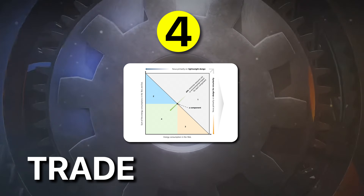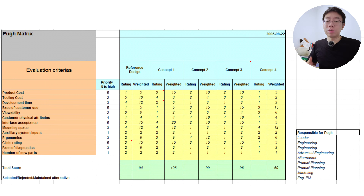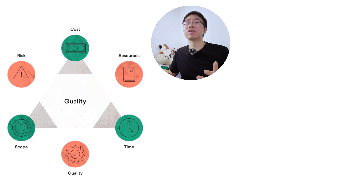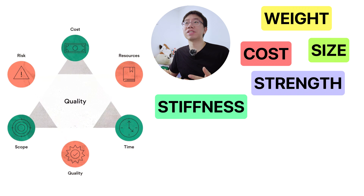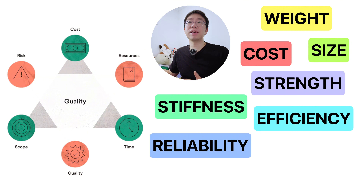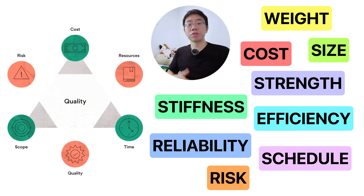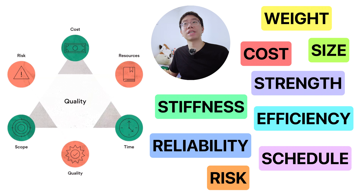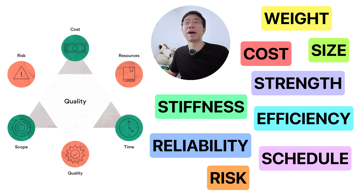The fourth idea is trade-offs and optimization under constraints. Mechanical engineering is never about maximizing a single variable. Every design exists within competing constraints: weight, cost, size, strength, stiffness, efficiency, reliability, schedule, and risk. Improving one metric almost always degrades another. Increasing stiffness increases mass. Reducing mass increases stress and fatigue risk. Improving efficiency may increase cost, complexity, or development time. In industry, these trade-offs are often shaped as much by company goals as by physics.